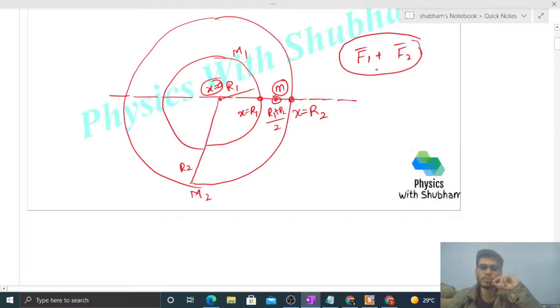The net force on small m will be their vector sum. So look at the inner shell. Its radius is R1 and its mass is M1.